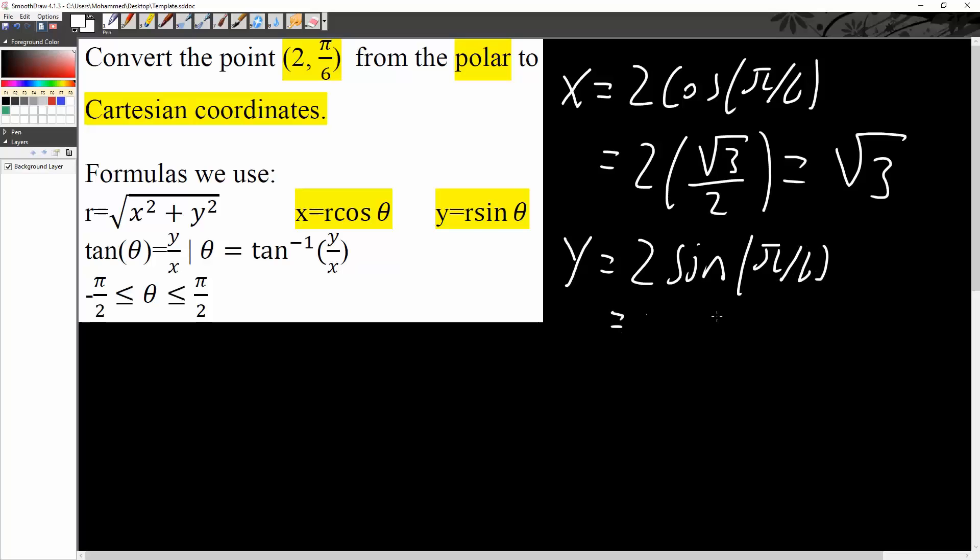And we know that sine π over 6 is equivalent to 1 half. So 2 times 1 half, and so we would get 1.